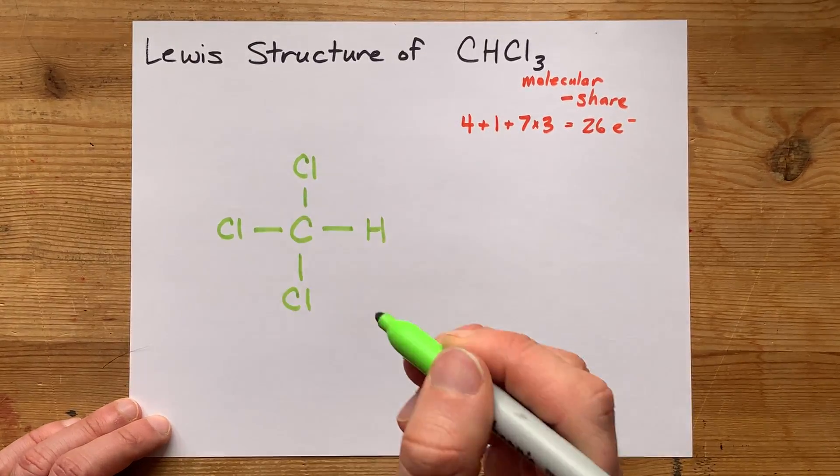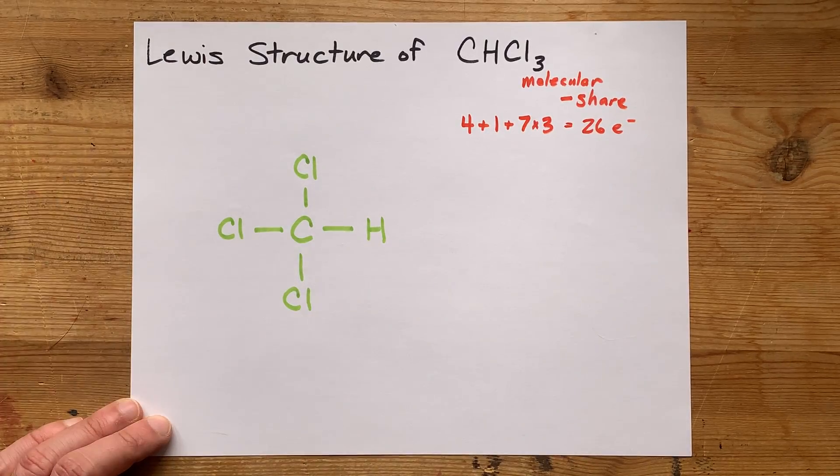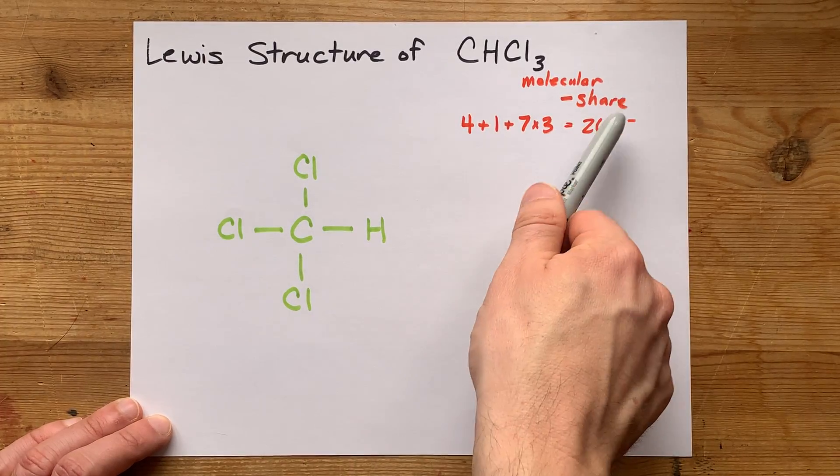That's 2, 4, 6, 8 electrons that we've already accounted for, and we need 26.